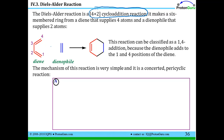How does this reaction work? In our last lesson we talked about 1,2 versus 1,4 addition products. The Diels-Alder reaction is a 1,4 addition product — you don't have to decide if it's 1,2 or 1,4. The dienophile — the thing that reacts with the diene — adds to the one and four positions of the diene. This is the diene because it's got two alkenes, which we call a diene.